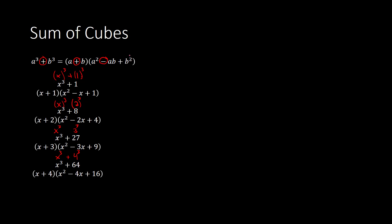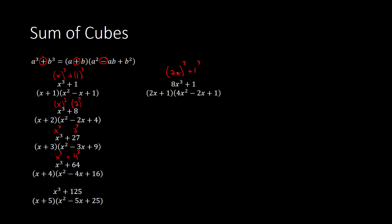What if instead of an x cubed, we had something like 8x cubed plus 1? The 8 is the same thing as 2 cubed — 2 times 2 times 2. So I can think of this expression as 2x to the third power, because 2 cubed is 8 and x cubed is x cubed. Over here, this is going to be 1 cubed. So instead of a and b, I plug in 2x and 1. Instead of a plus b, I have 2x plus 1. Instead of a squared, I have 2x squared — so 4x squared. Instead of a times b, I have 2x times 1, or just 2x. Instead of b squared, I have 1 squared. So this would be the factored form.